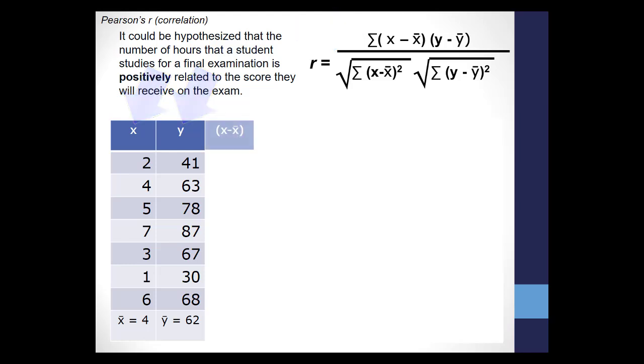So starting with x, 2 minus the mean of x, which is 4, equals negative 2. Then 4 minus the mean of x, 4, equals 0. Continue doing this for all the scores in the x group.